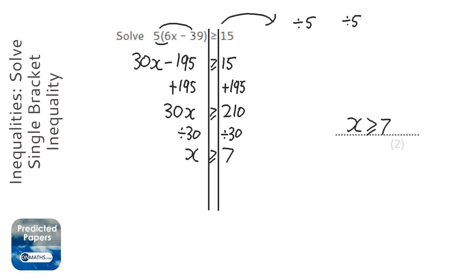And then you'll end up, if I just quickly finish this off. So you'll end up with 6x minus 39 is greater than or equal to 3. Then you plus 39 both sides.